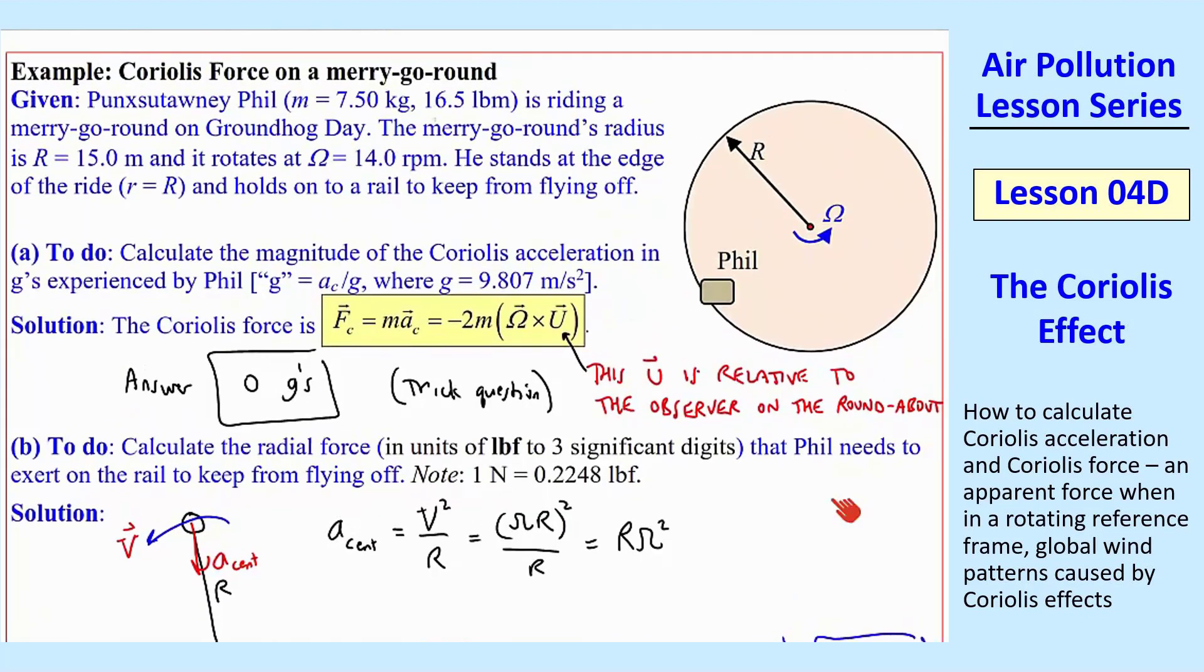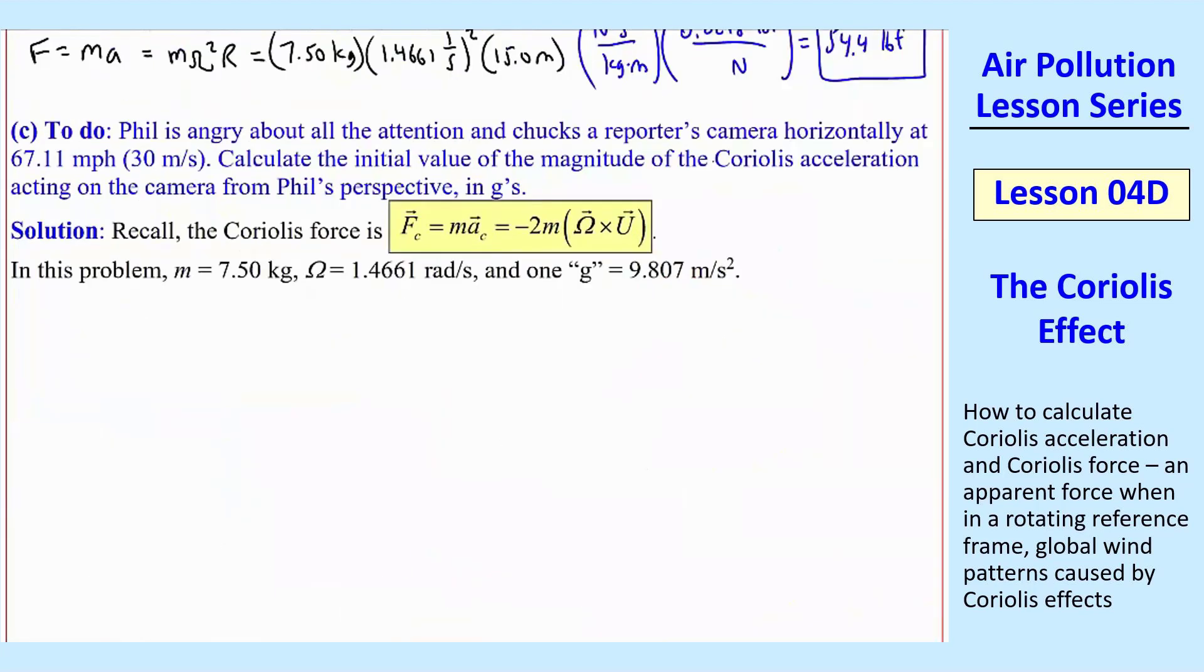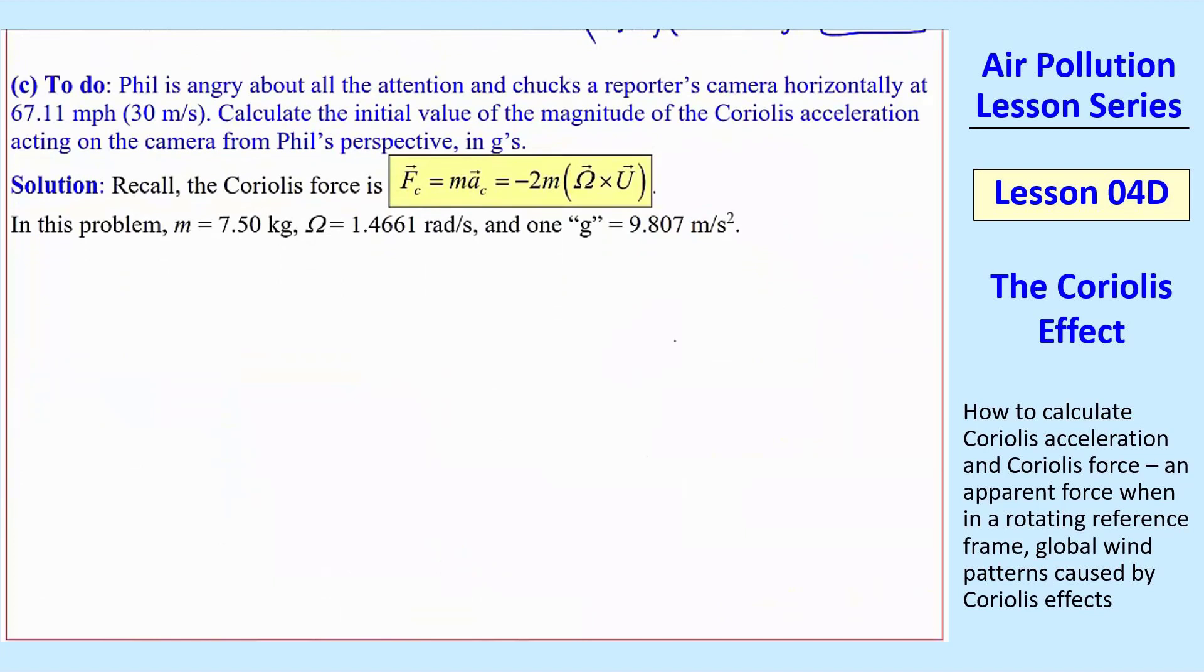Omega has to be in radians per second times R, and then some unit conversion. So I get 54.4 pound force. And I want to just up here, I'll show you how I converted that from RPM to radians per second. Omega is given as 14.0 RPM rotations per minute. And then I just multiply by 2 pi radians per rotation, 1 minute per 60 seconds, and I get 1.4661 radians per second. Radian is a non-dimensional unit. It's really just 1, so 1.4661, 1 over second. So that's what I plugged in here.